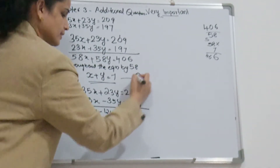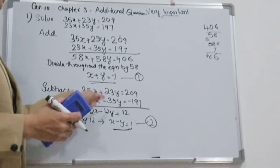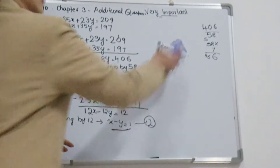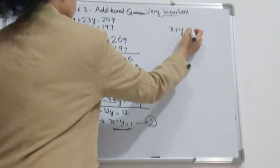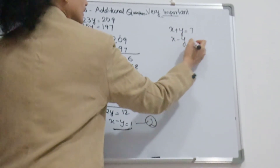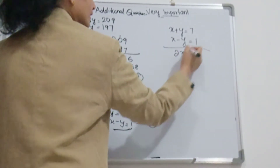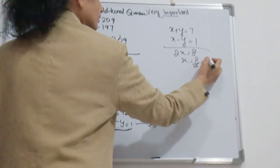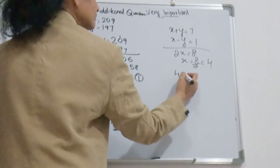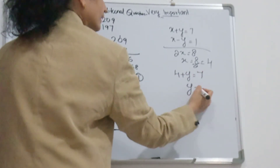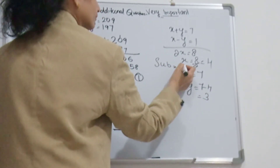Now we have two simplified equations: x plus y equal to 7, and x minus y equal to 1. Using the elimination method, adding them gives 2x equal to 8, so x equals 4. Substituting back, 4 plus y equals 7, so y equals 3.